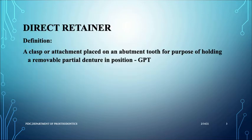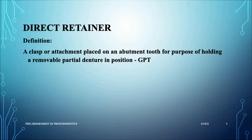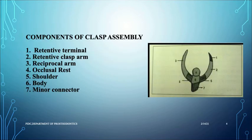A direct retainer is a clasp or an attachment placed on an abutment tooth for the purpose of holding a removable partial denture in position. When you place a denture in a patient's mouth it has to be retentive, meaning it should stay in its place without getting displaced. The clasp holds onto the abutment teeth and prevents the falling of the removable partial denture, so it is called a direct retainer.